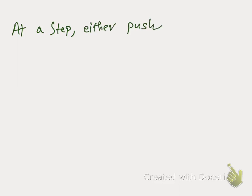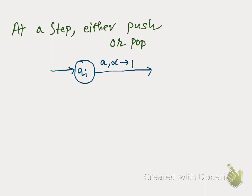For this proof we make an assumption: at any given step, we only do one of two things — we either push a symbol on the stack or we pop a symbol from the stack. We do not do both at the same time. For example, if we have 'a' on the input tape and alpha on the stack and we push beta, that step was doing both: popping alpha and pushing beta.